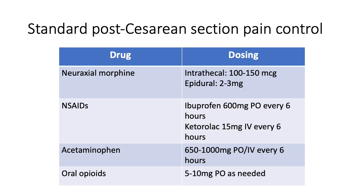Suboptimal pain management after C-sections is associated with chronic pain, greater opioid use, delayed recovery, impaired bonding with the baby, and an increased risk of postpartum depression. The use of neuraxial morphine or duramorph and non-opioid pain medicines such as NSAIDs or Tylenol are recommended for all women undergoing cesarean delivery with neuraxial anesthesia unless contraindicated. Oral opioids such as oxycodone can be given on an as-needed basis.